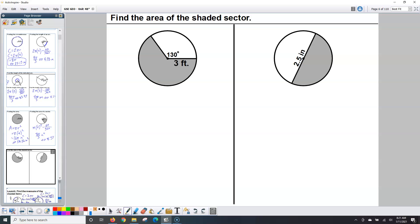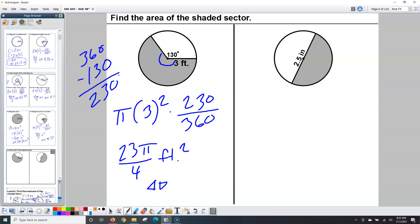Next, find the area of the shaded sector. When I look at the one on the left, the 130 degrees is not shaded, so that means I have to figure out what this degree is over here. I'm going to say 360 minus the 130, that would be 230 degrees. So I'm going to say πr is 3 in this case, squared, times 230 out of 360. That gives me 23π over 4 square feet. Magic arrows, 18.06 square feet.